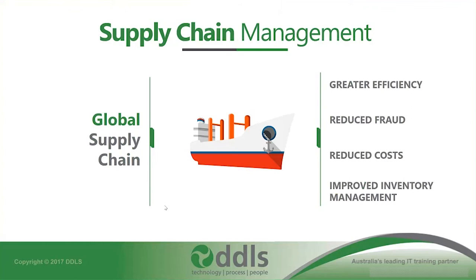Another big use case is supply chain management. It allows for greater efficiency, particularly using smart contracts to automate processes. It can lead to a reduction in fraud, drastically reduced costs both from efficiencies and the costs of documents themselves. Several companies are putting bills of lading — records of everything on a shipping container, useful for trade financing — onto a blockchain. This can also lead to improved inventory management, enabling access to a global supply chain.